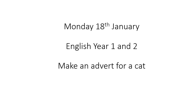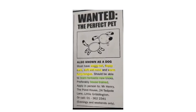I'm going to show you first an advert for a dog. Last week we looked at the story Wanted the Perfect Pet, and in that story Henry really wanted a dog. This is the advert he put into the newspaper for a dog. You can see that I've highlighted in yellow some of the things to describe a dog.